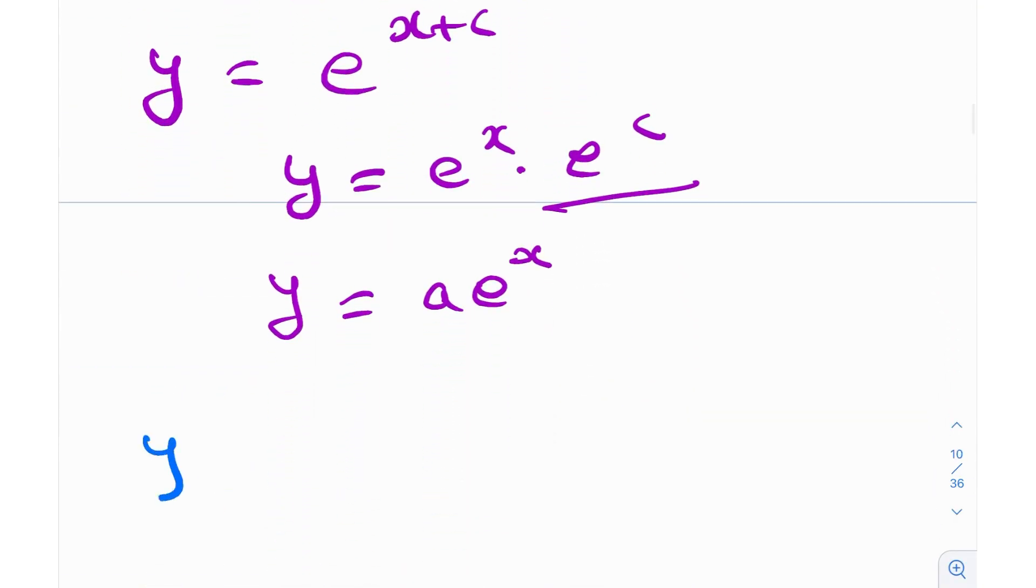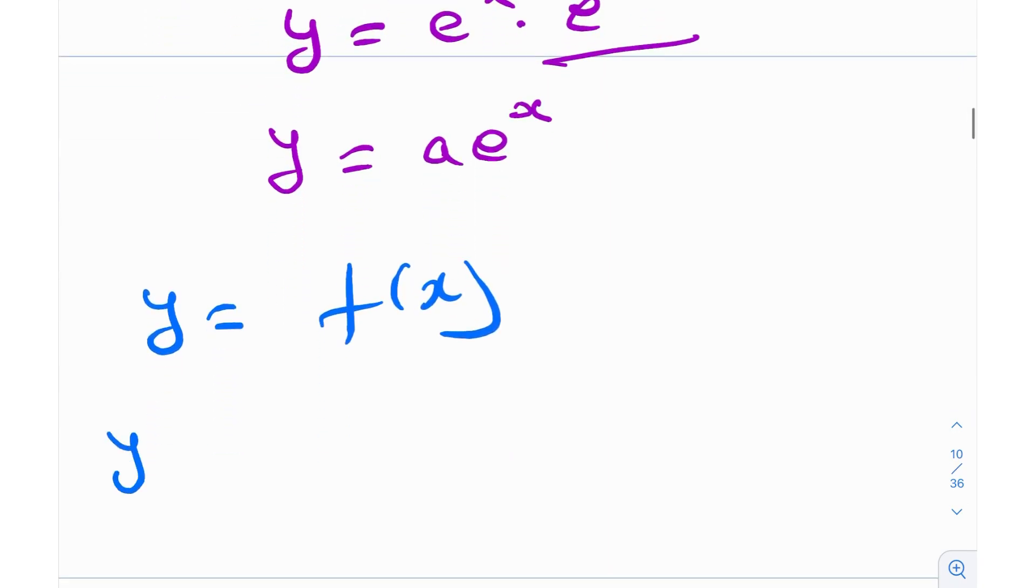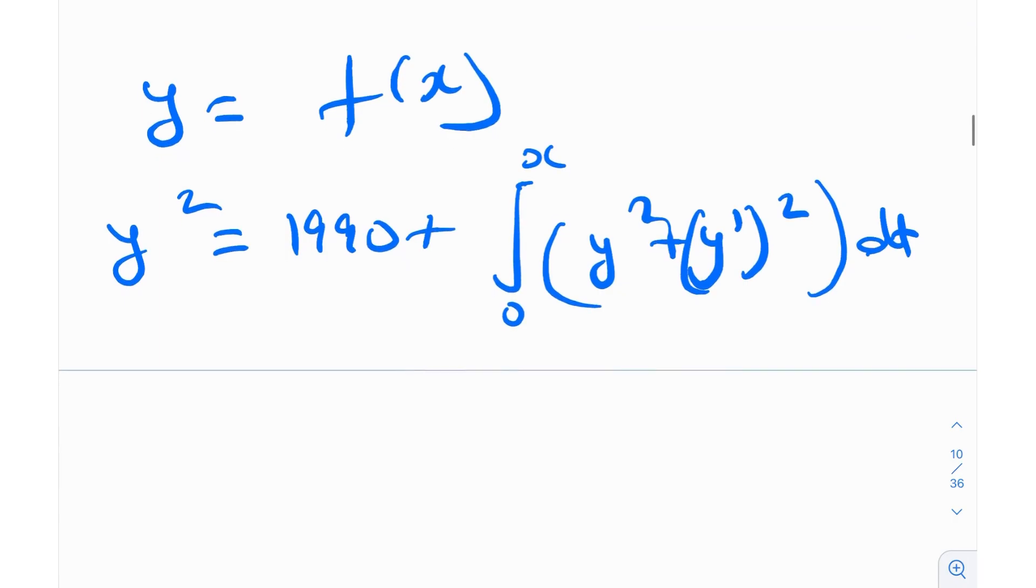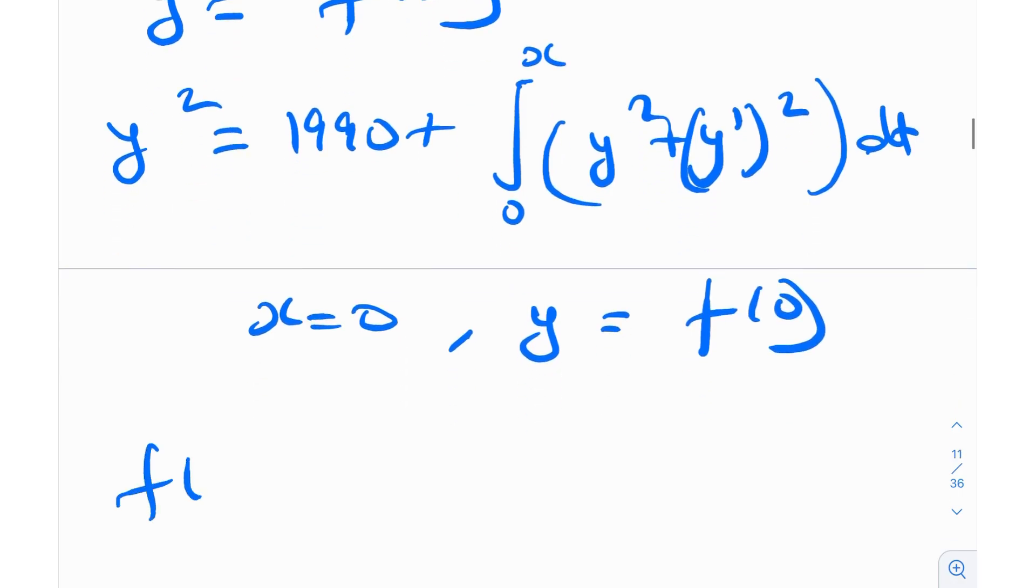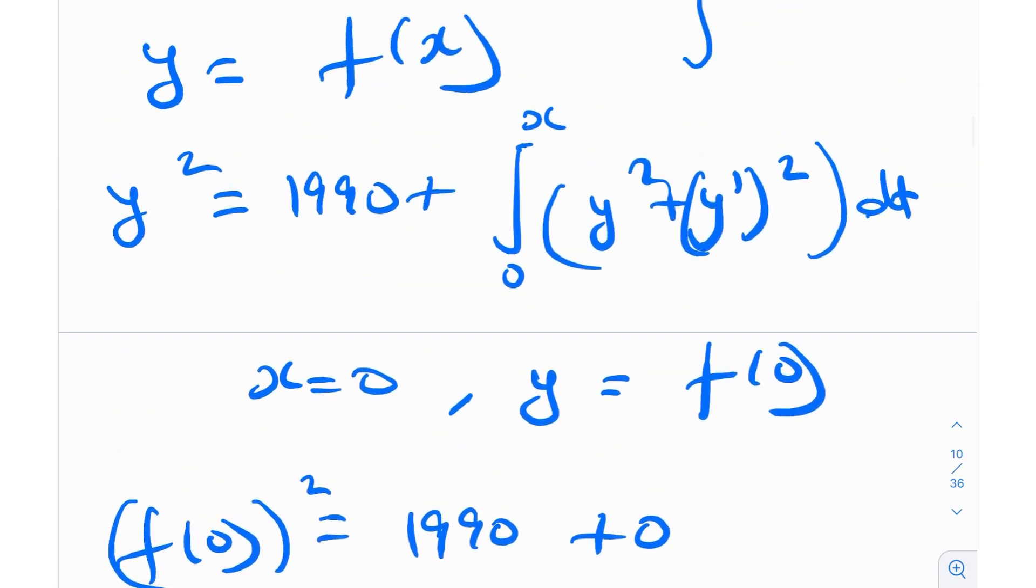But what next? We had y = f(x), and we also had y² = 1990 + integral from 0 to x of (y² + (y')²)dt. Maybe if I just plug in x = 0, let's see what happens. x = 0 means y = f(0), which essentially means f(0)² = 1990 + 0.